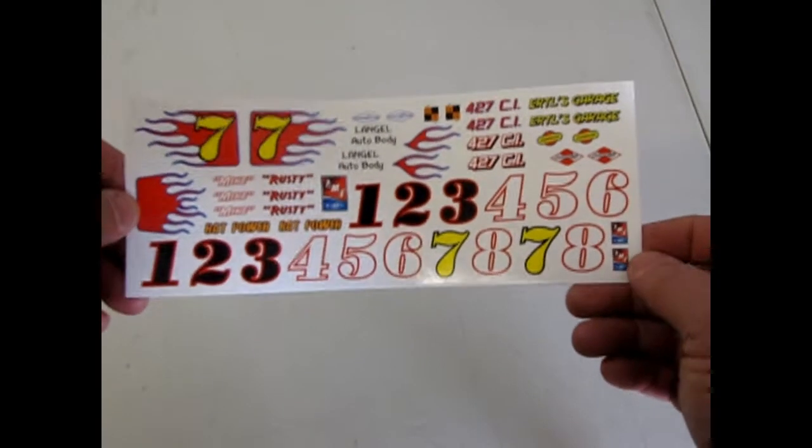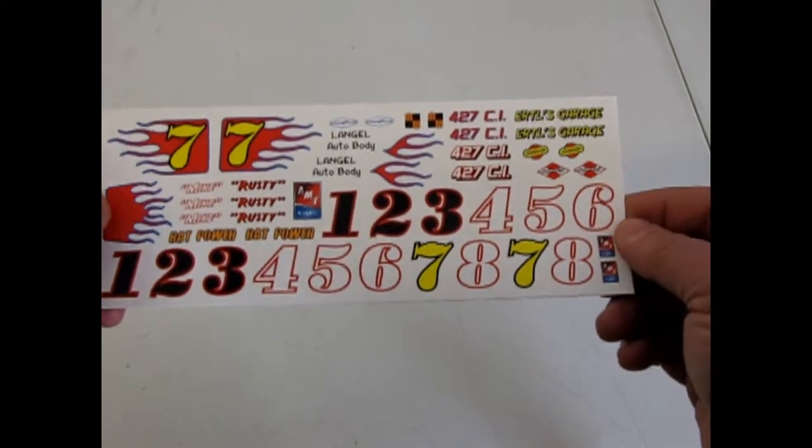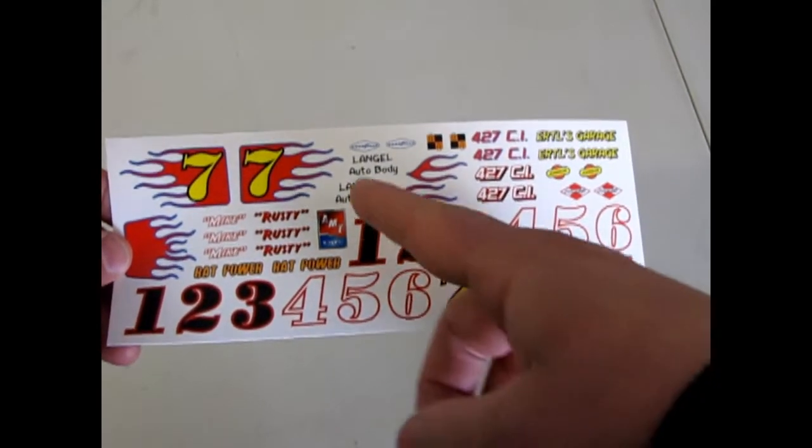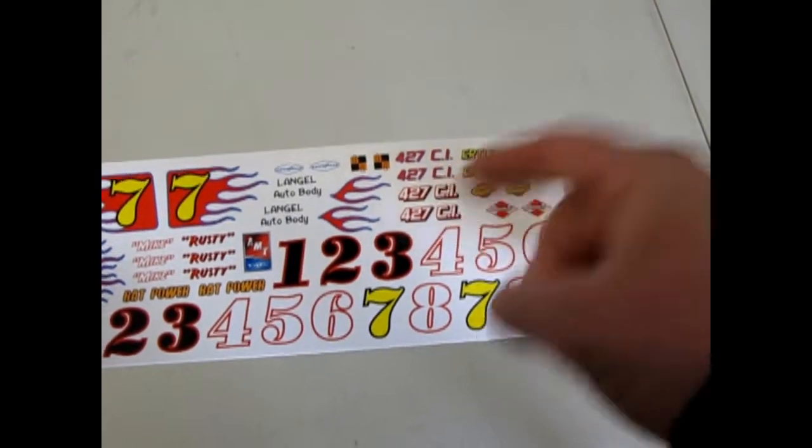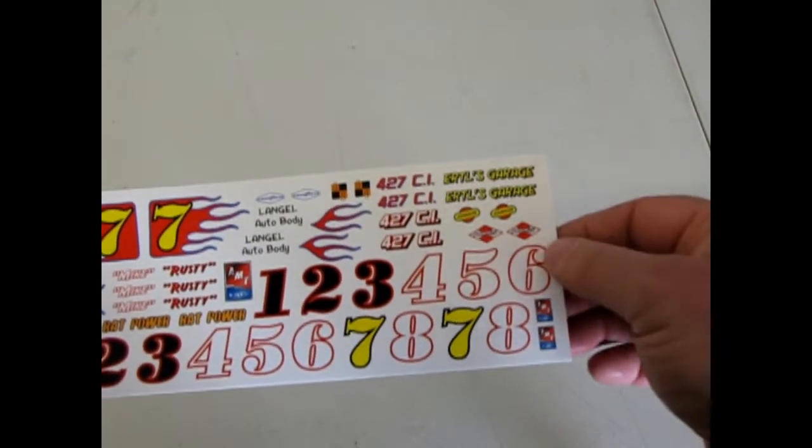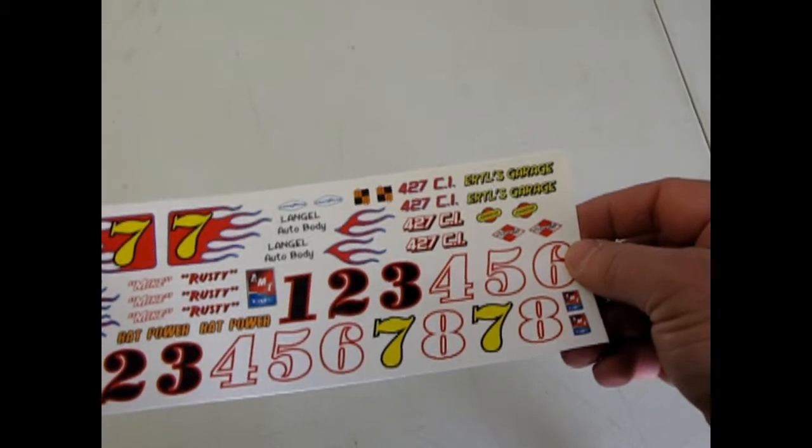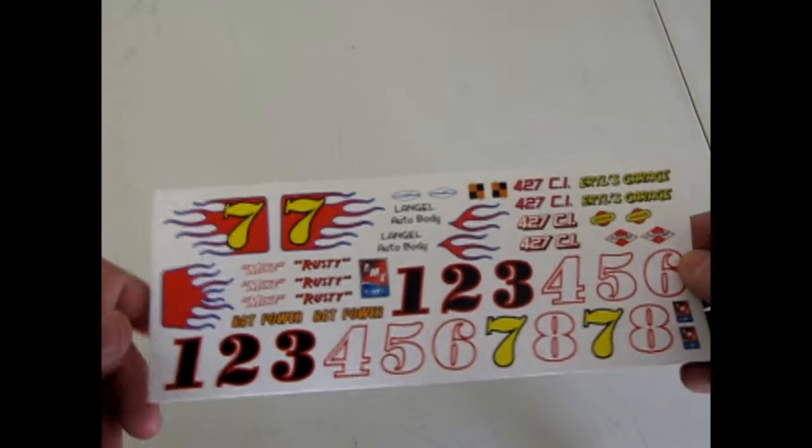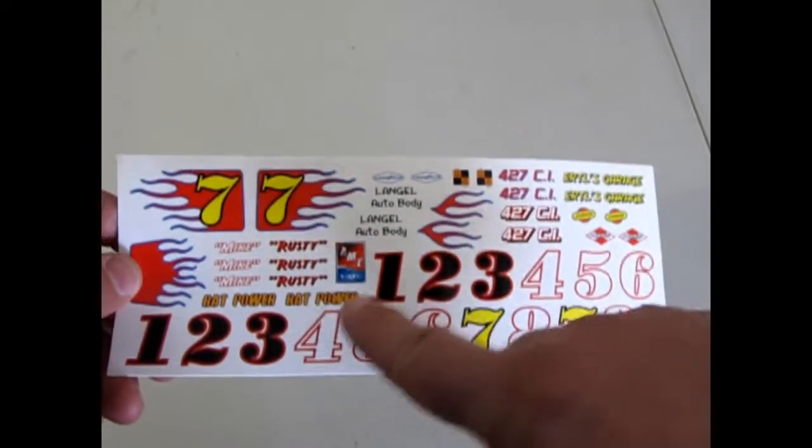Now let's look at the decals in this kit and here they are. Again these are beautiful because you get all the different numbers, you get a few different names, you get a couple of different cubic inch displacements. Again this is using a 427 and the flames with the number 7 in it which is also really cool and the modern AMT Ertl logo from around RC2.